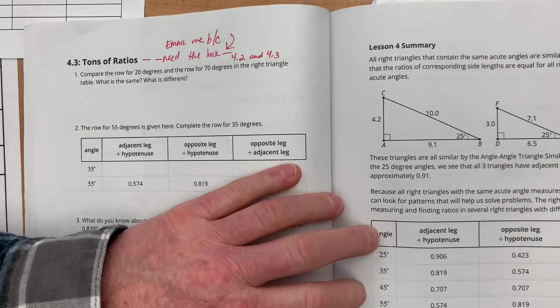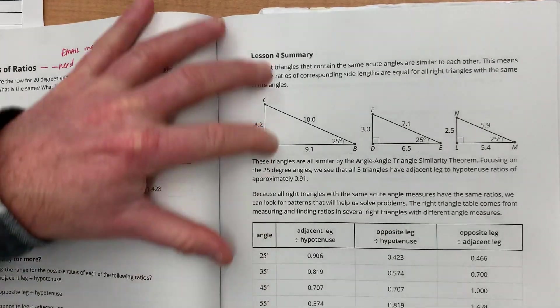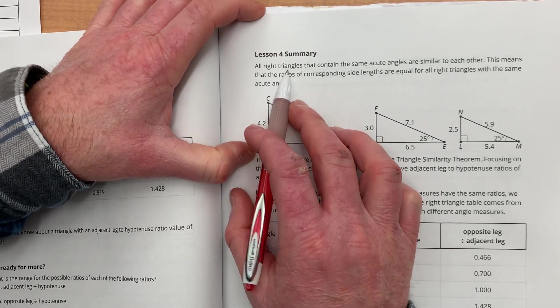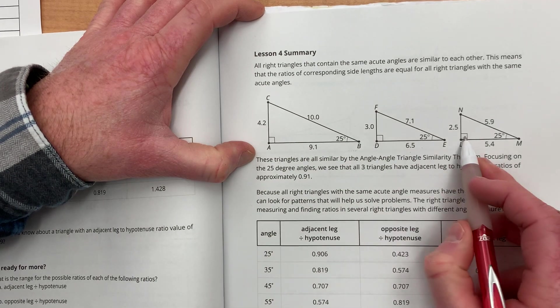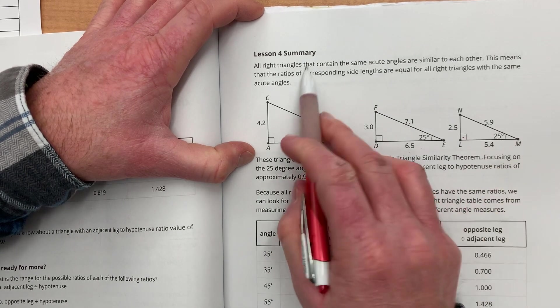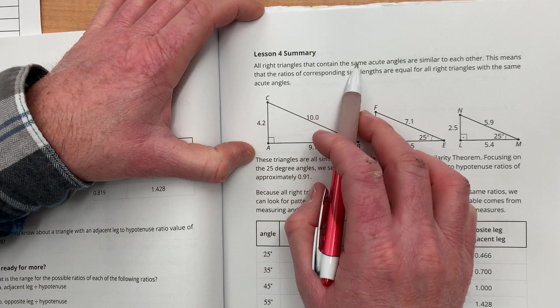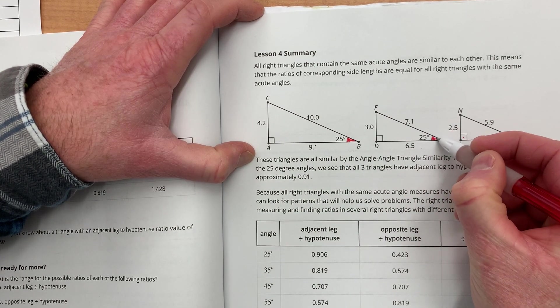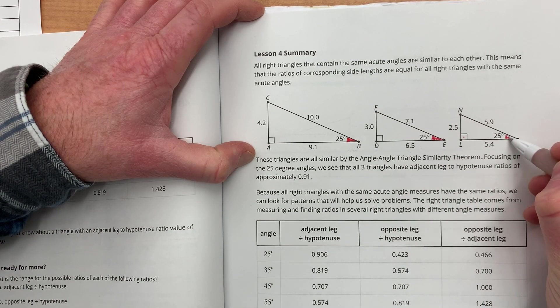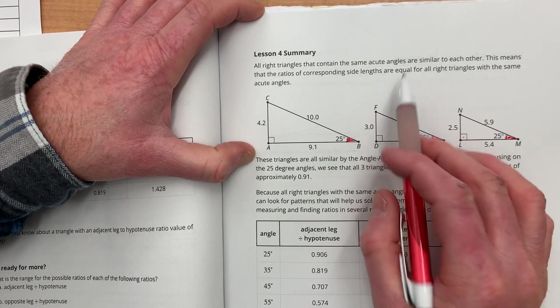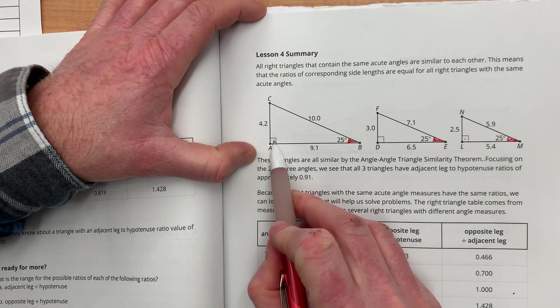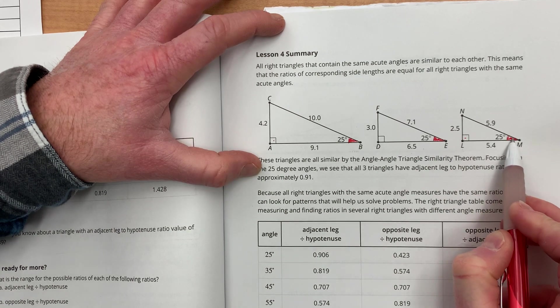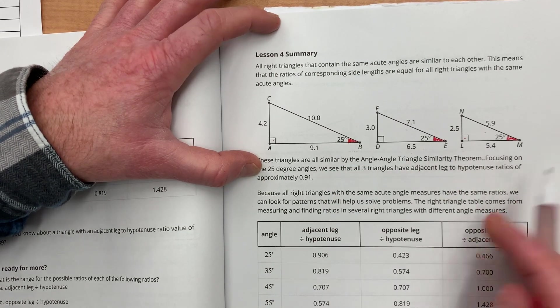Now, let's look at the lesson four summary. We can definitely touch upon that. So, that says that all right triangles that contain the same acute angles. So, in this example, we've got a 25 degree angle. So, these three triangles are similar to each other. You've got a right angle and the 25. So, these three triangles are similar.